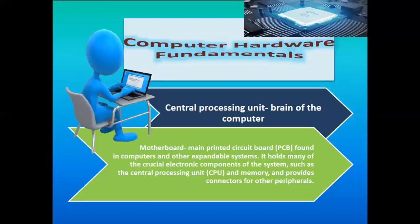Computer hardware fundamentals: the central processing unit, or CPU, is the brain of the computer. Contrary to common knowledge, the CPU is not the box beside your monitor — it is the small chip inside your motherboard. The motherboard is a main printed circuit board (PCB) found in computers. It holds many crucial electronic components such as the CPU and memory, and provides connectors for other peripherals.